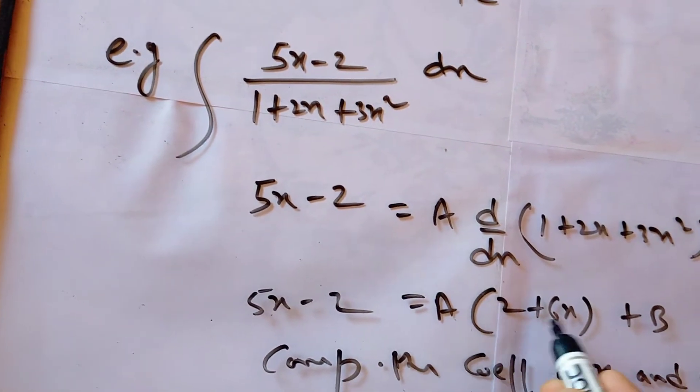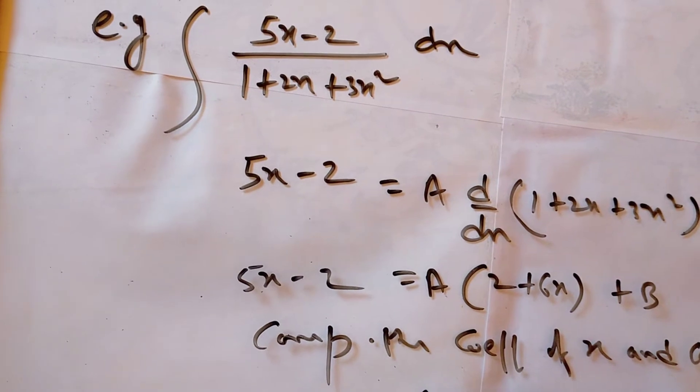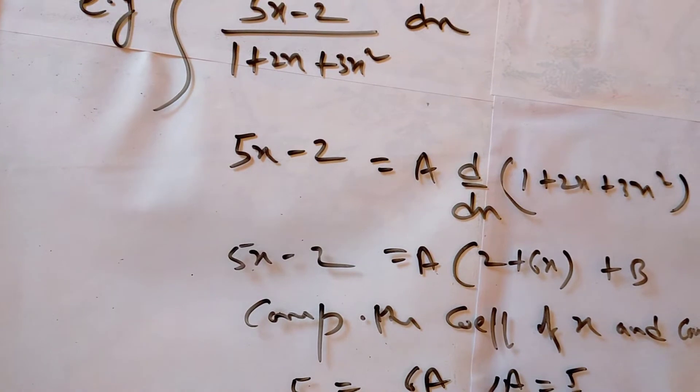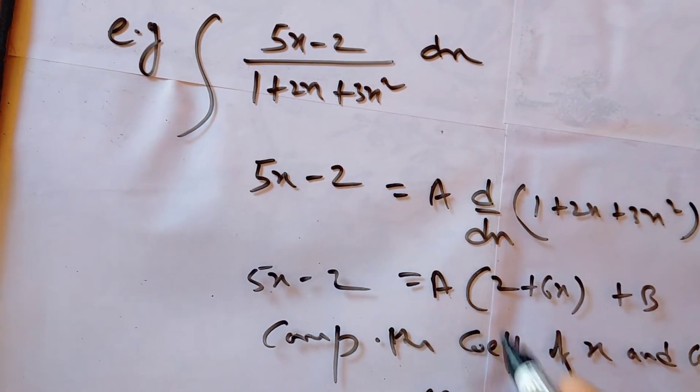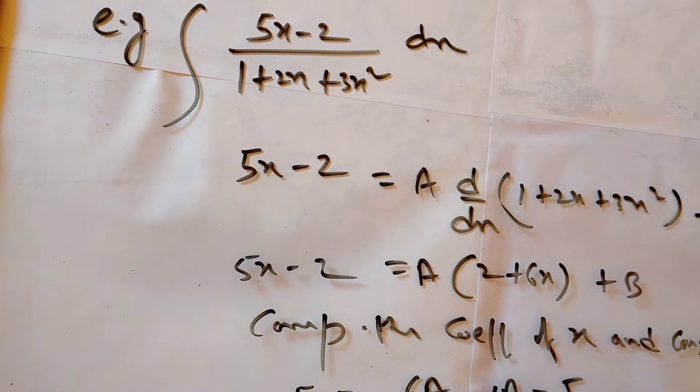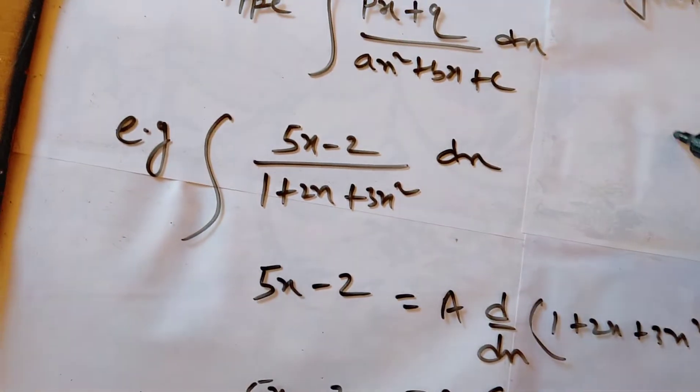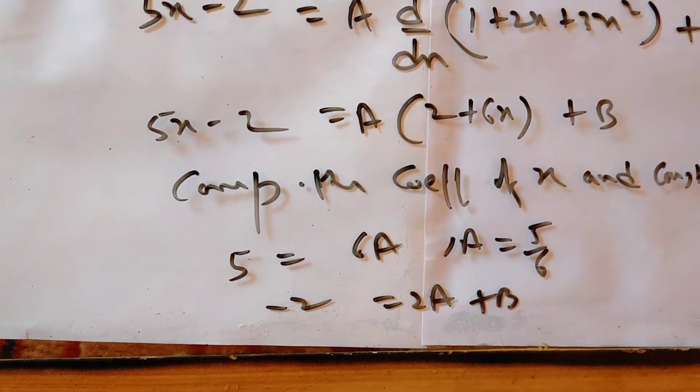Here are the coefficients. We have to compare the coefficients of x and constant. The coefficients of x, here 6A, there 5. So 6A = 5.